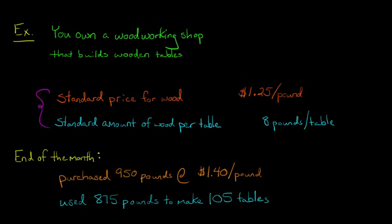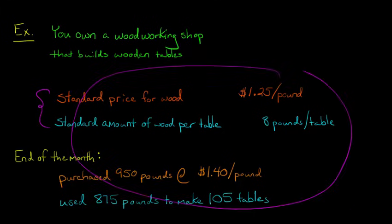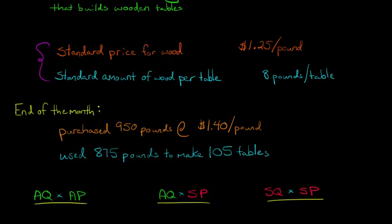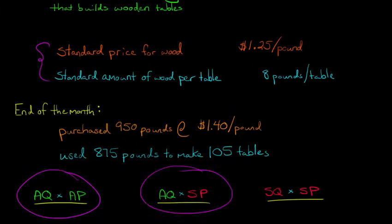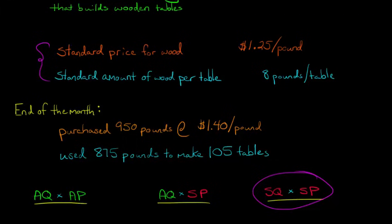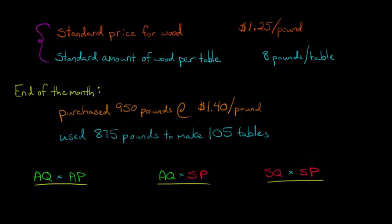I know it's probably complicated at this point — you see all these different numbers. Just go back to the formula we talked about before when putting together a variance analysis. We're going to have three columns here: in the far left column, actual quantity times actual price; in the middle column, actual quantity times standard price; and in the third column, standard quantity times standard price. We can use these formulas to go ahead and input the numbers.